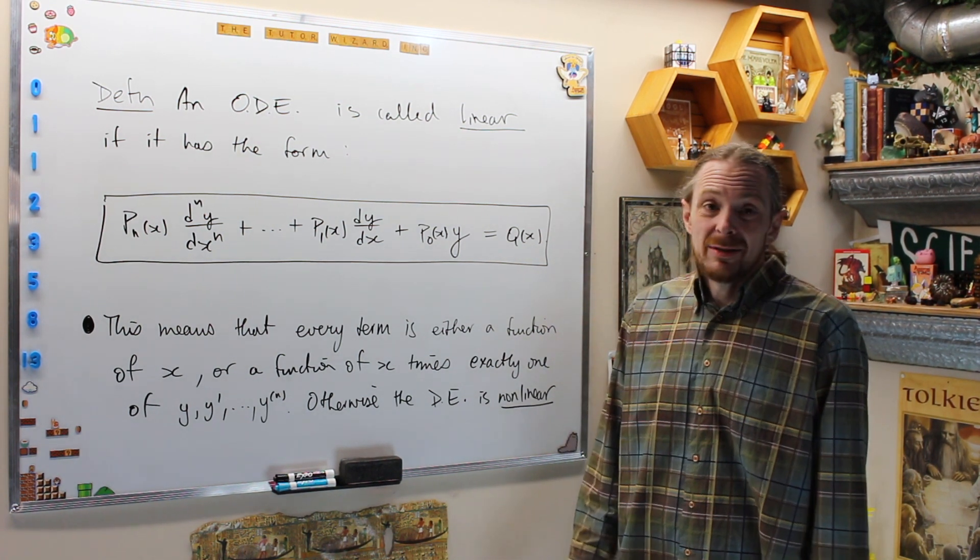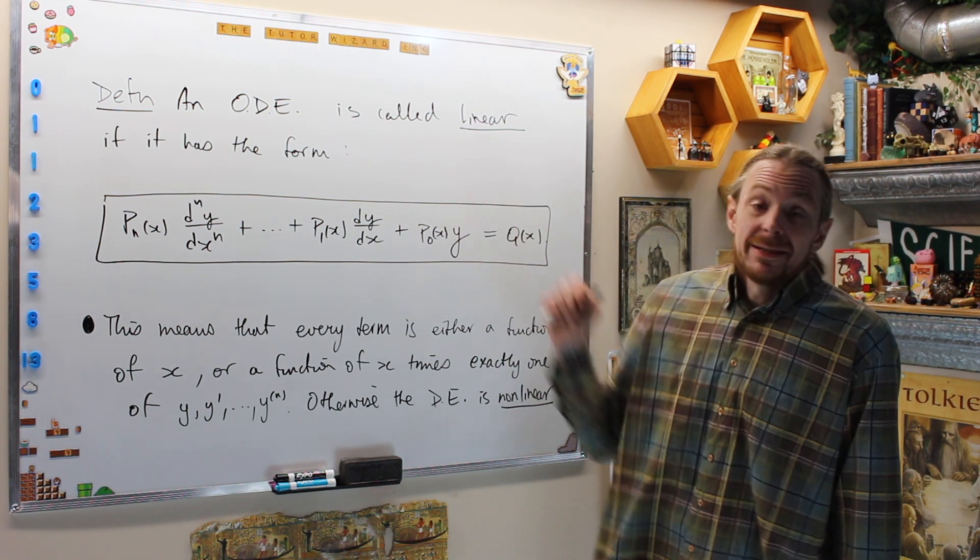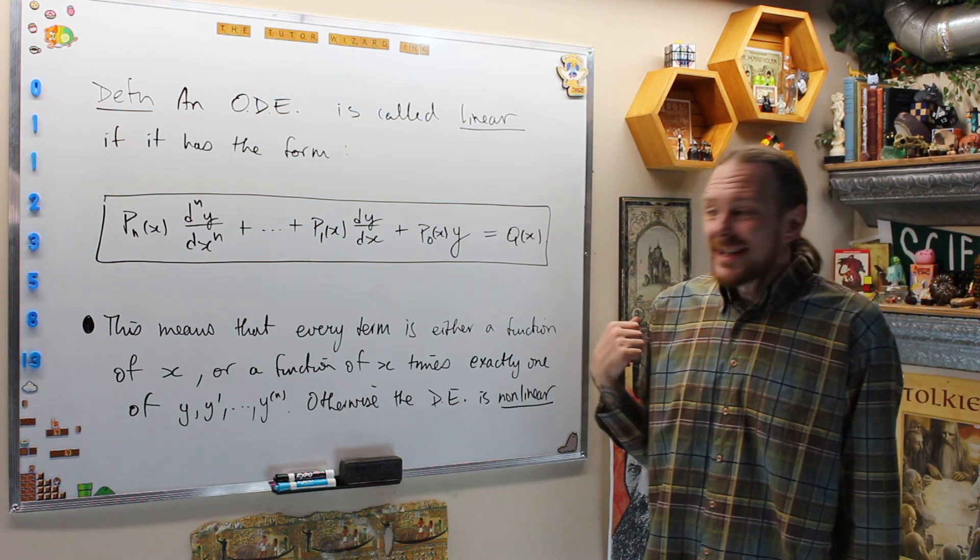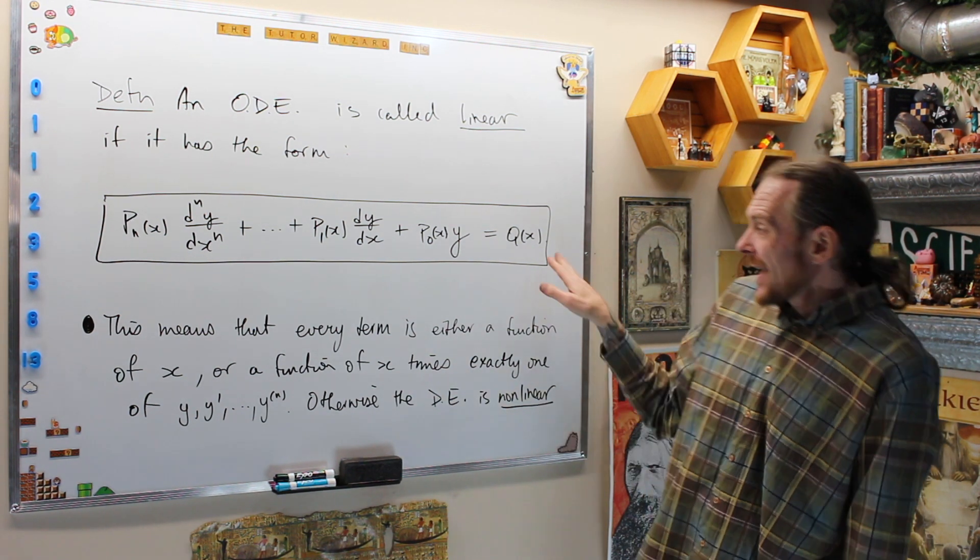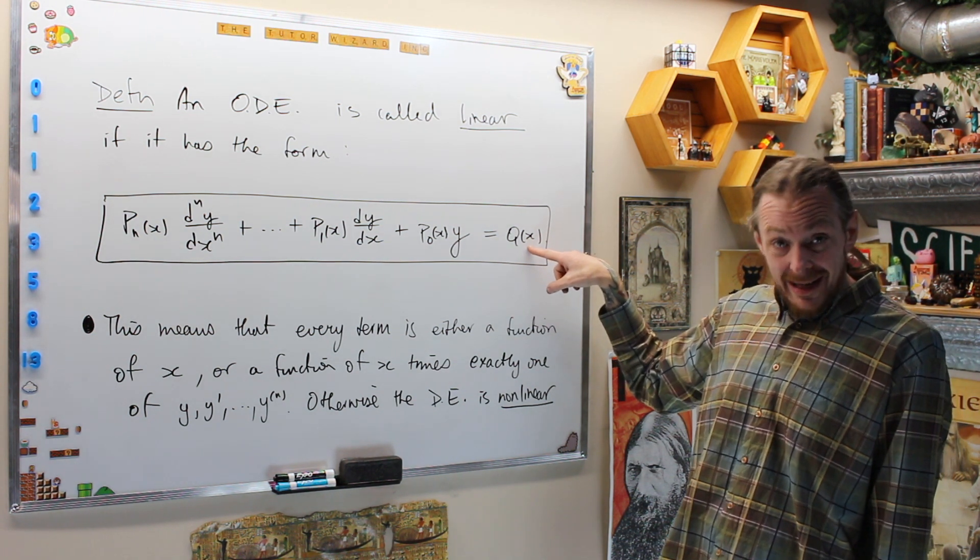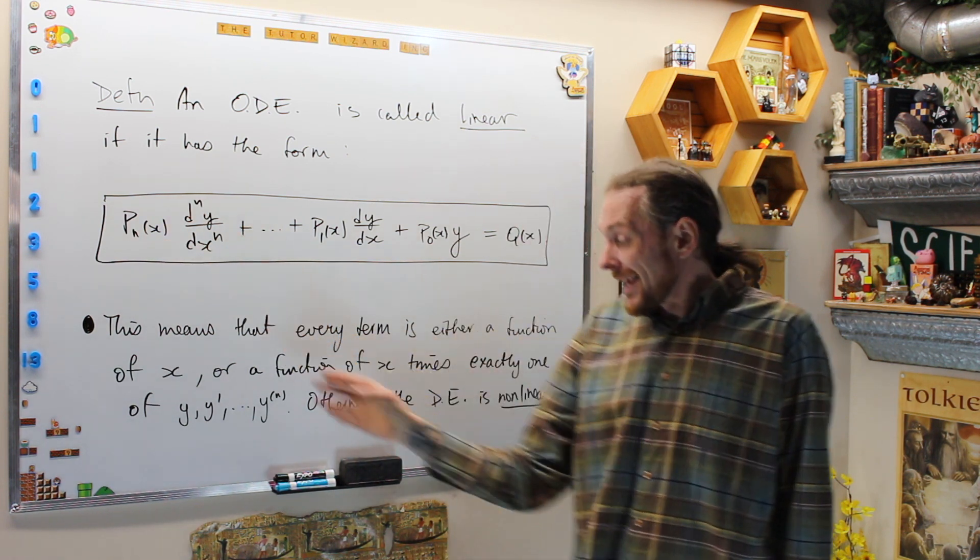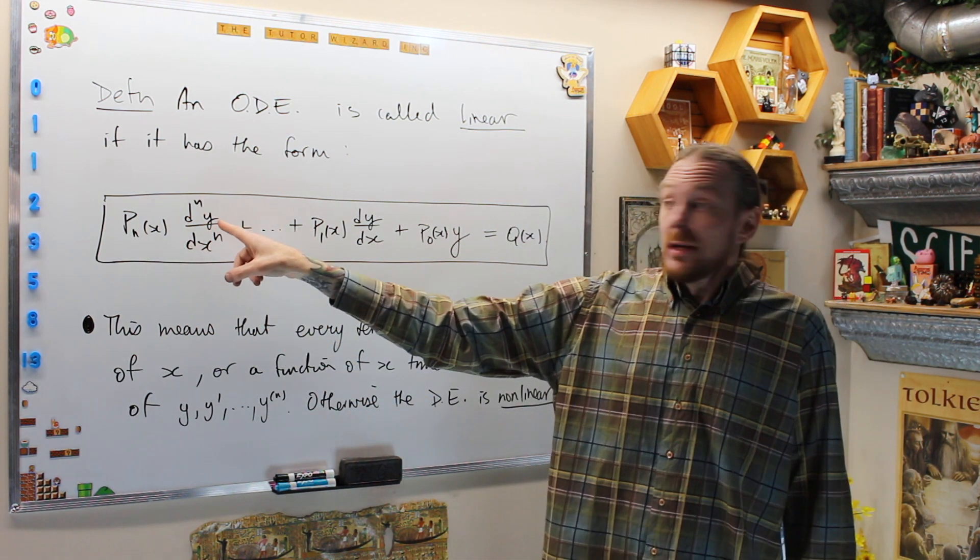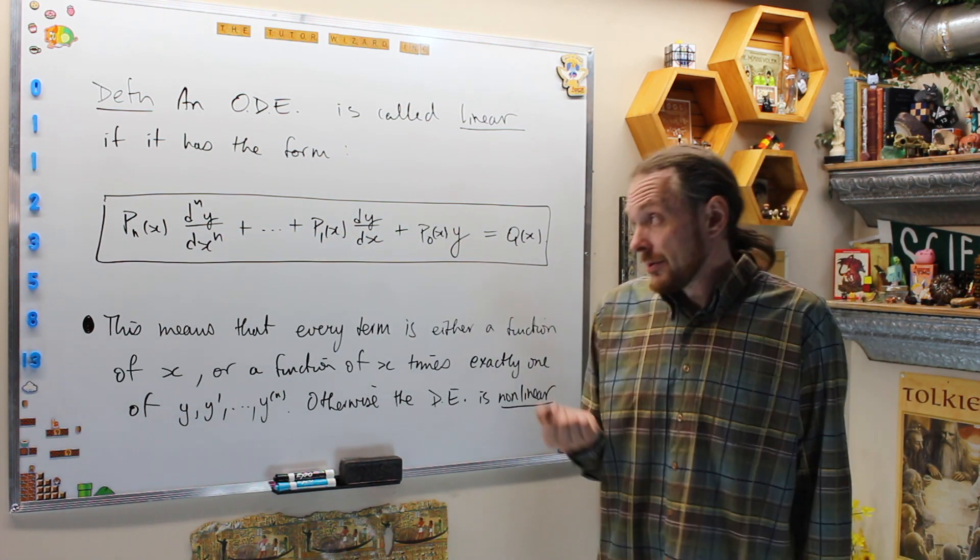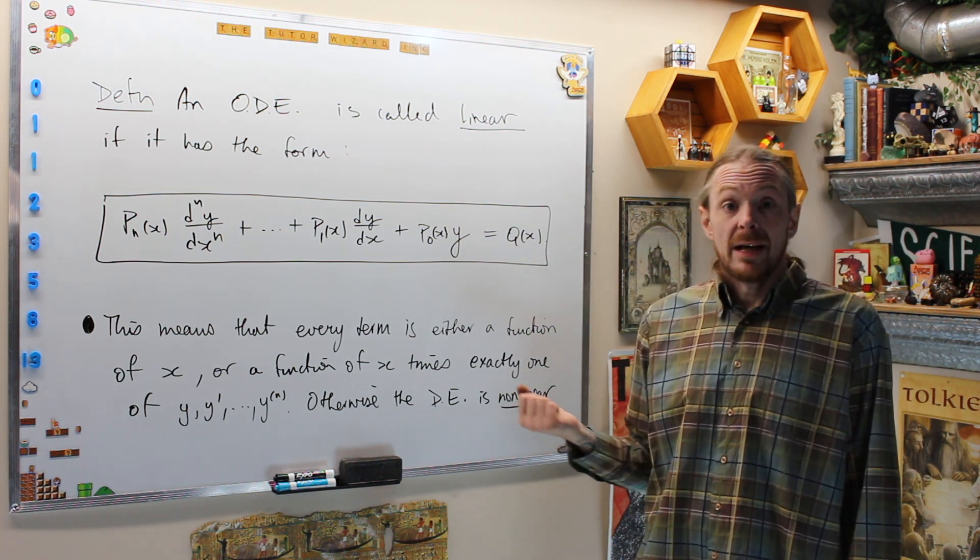The last concept of this video is the notion of linear or non-linear differential equations. A differential equation is called linear if it has this form. What that essentially means is every term is either just a constant or a function of X, or every term is a function of X times exactly one of either Y or one of its derivatives. This is what we call a linear differential equation; otherwise it's called non-linear.